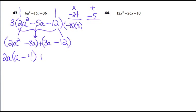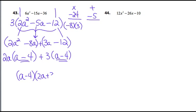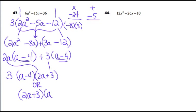In the second group, the greatest common factor is 3, and I need (a − 4) — and those match. If they don't match, it's probably not factorable. I write that binomial down once as (a − 4), and write down (2a + 3) in the other group. Then I don't forget the greatest common factor of 3 from up above. The final answer is 3(a − 4)(2a + 3), and remember the order of the binomials doesn't matter.